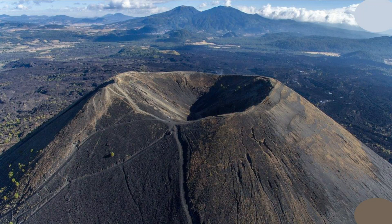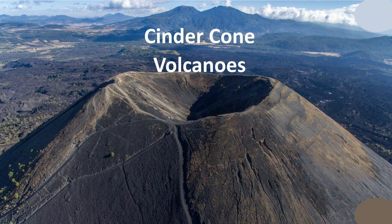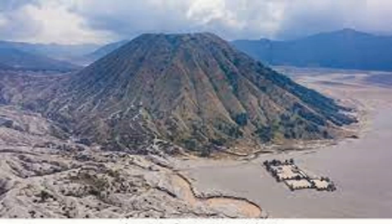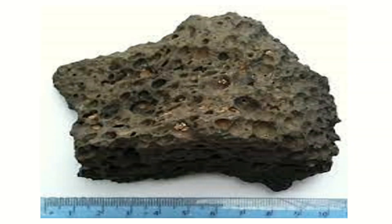The next type of volcano is Cinder Cones, also known as Scoria Cones. Cinder Cones are the most common type of volcano. They are named after the igneous rocks called cinders that fall and form the cones after an eruption.